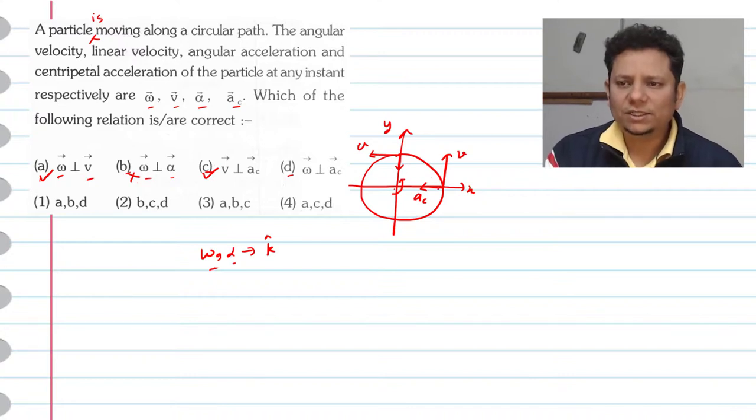Now ac is in any location pointing to the center. Omega is perpendicular to the plane. So this is also correct.